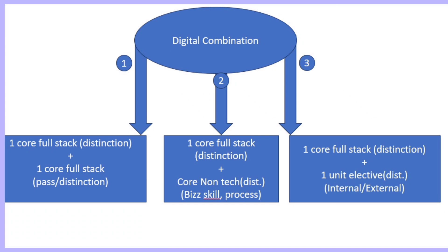For the second combination, alongside the core full stack with distinction, you can choose any non-tech courses like B-Skill or Process. Note that articulation is not chosen here because it is already a mandatory prerequisite — you either pass or achieve distinction in the prerequisite area only. So apart from that, you can choose B-Scale or Process to become Digital.